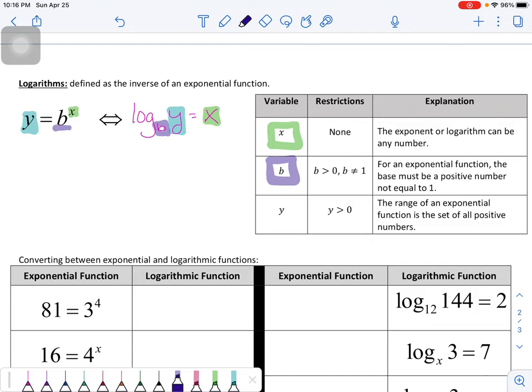Now, b we've talked about a couple of times. b has to be greater than zero, but it cannot equal one. Other than that, everything's fine. So no negatives, can't be zero, can't be one. That's what we got.